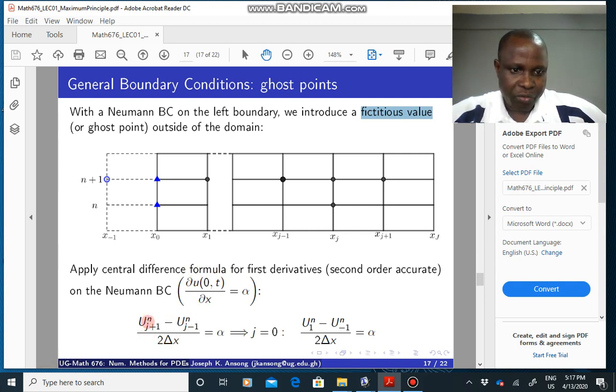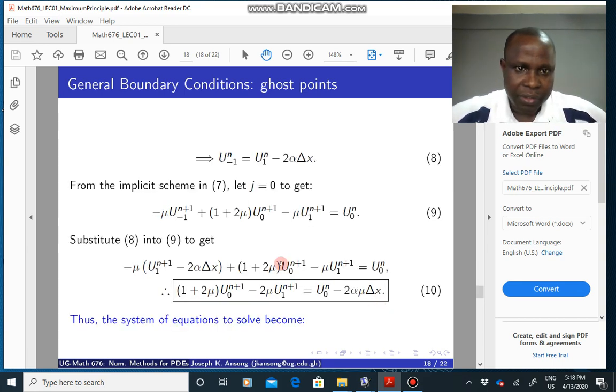The n doesn't really matter, it could be n or n plus 1. So central difference scheme will give you this guy here, which is equal to alpha. On this boundary, you can put j equals 0. When j is 0, you have this is equal to alpha. Note the negative one here. So that is where the problem is. So you can work that out. And so you have u at minus 1 to the n is equal to this quantity.